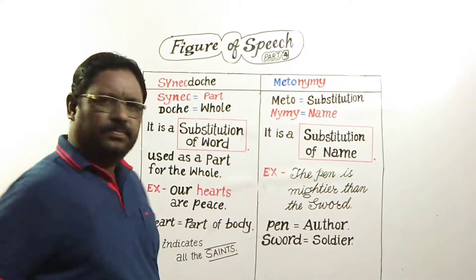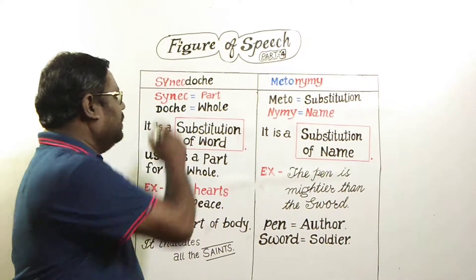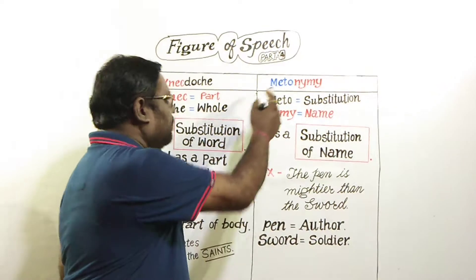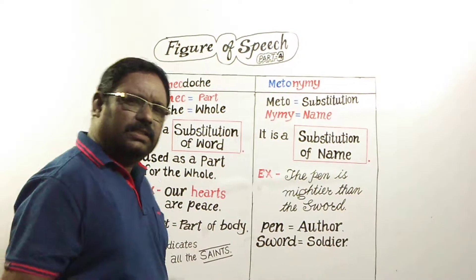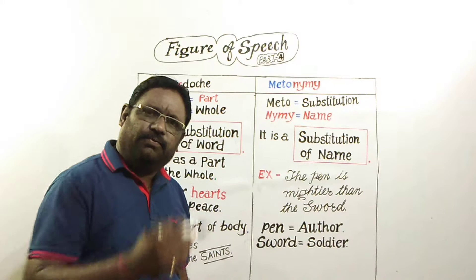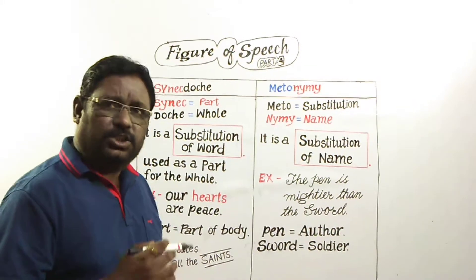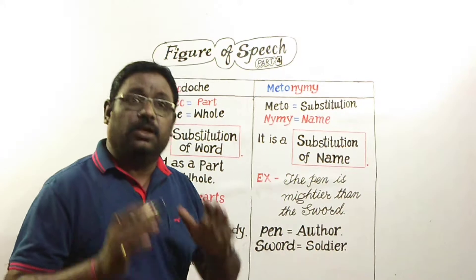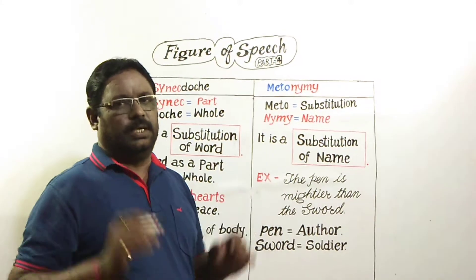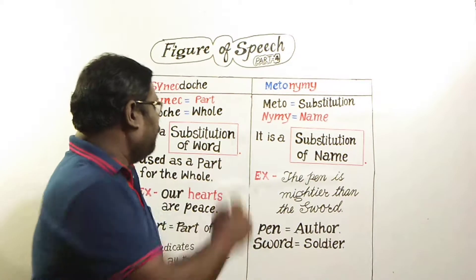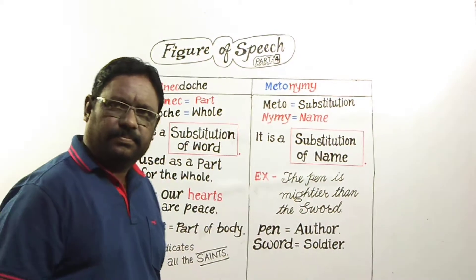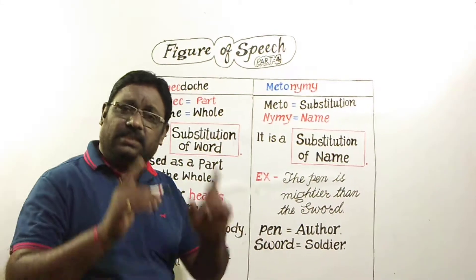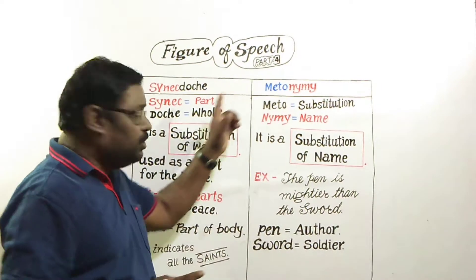Here you see Synecdoche and Metonymy. Synecdoche is a figure of speech in which a part is made to represent the whole or vice versa. It is a class of Metonymy, but there is difference between these two.